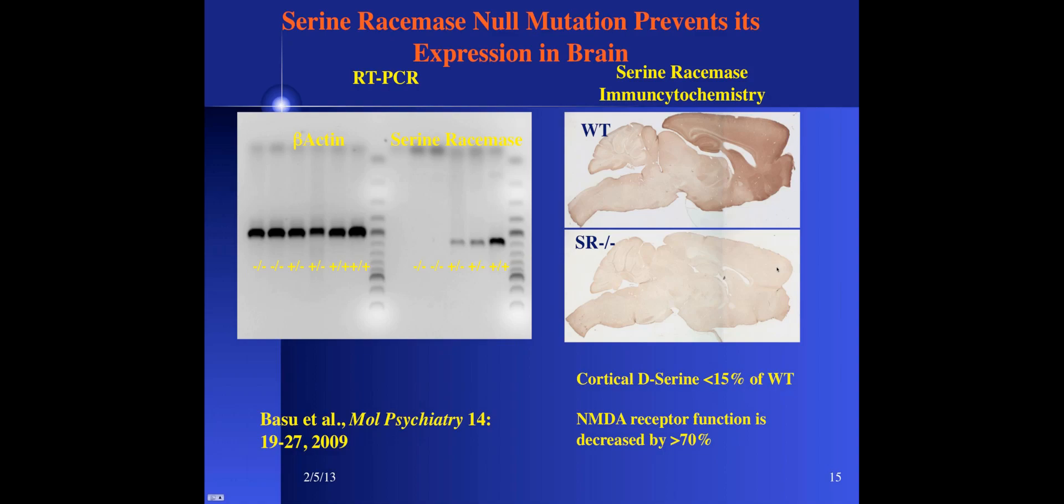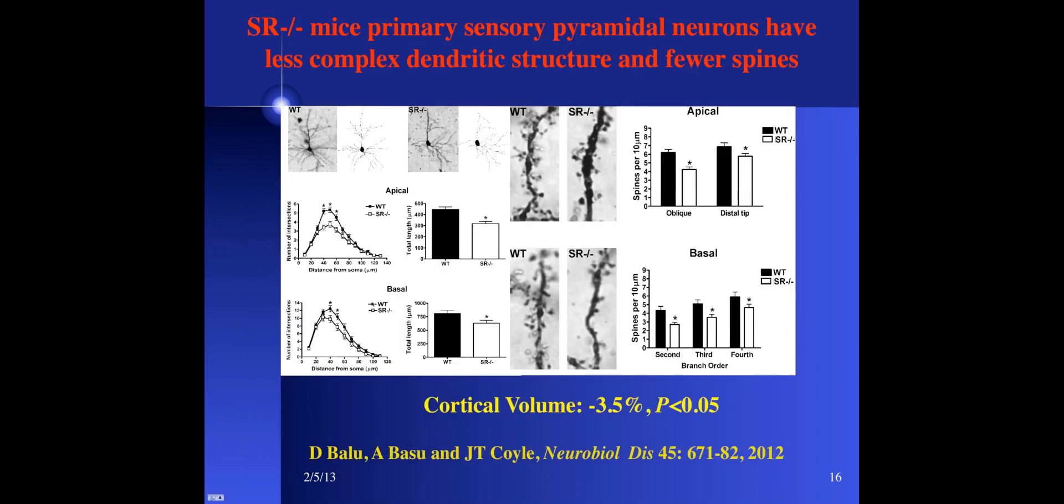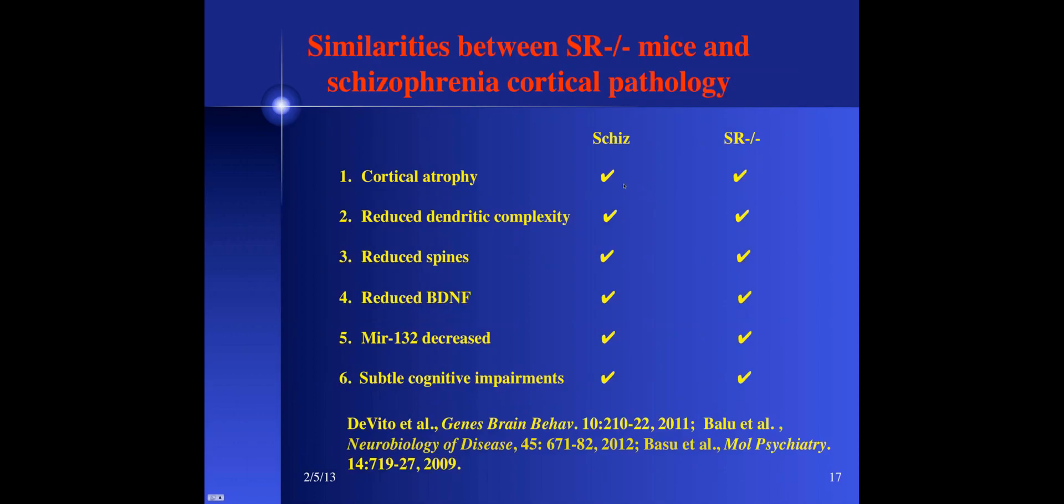I mentioned D-amino acid oxidase, serine racemase itself, G72 which modulates D-amino acid oxidase, all of which would reduce the availability of D-serine at the receptor. The NMDA NR2B gene, neuregulin which among other things directly interacts with the NMDA receptor. And finally dysbindin which regulates glutamate release, and mGluR3 which more recently has gained interest because of its role in regulating glutamate release.